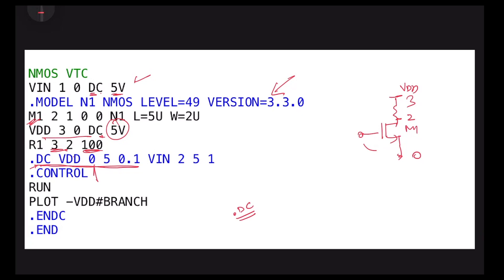For VDD, we are sweeping from initial value 0 to final value 5 volt, with steps of 0.1 volt. That's how this will sweep. You have seen ID versus VDS - sweeping from 0 to VDD at a step of 0.1.